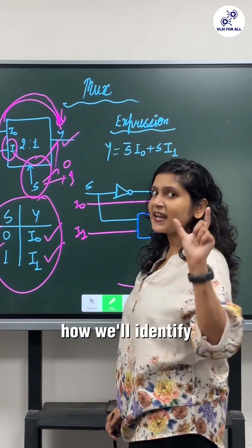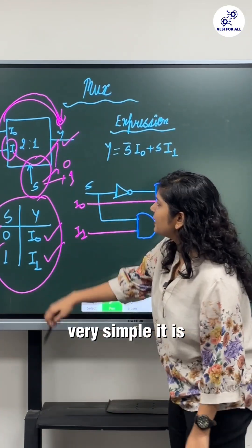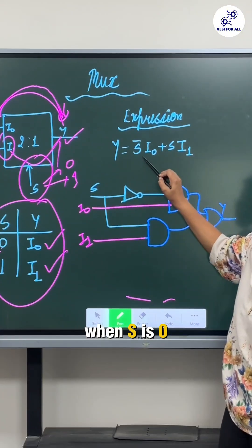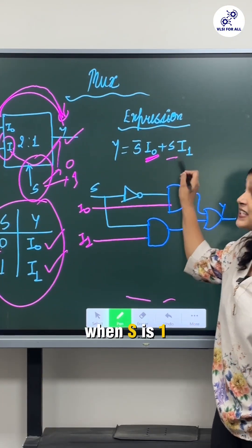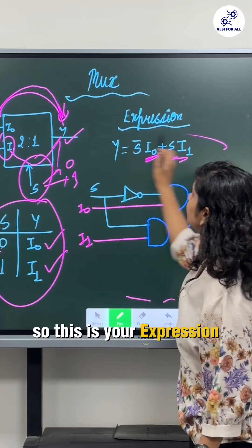Now we have to see how we will identify the expression. Very simple, it is when S is zero means it is complement, so you are getting I0. When S is one you are getting I1. So this is your expression for output of multiplexer that is 2:1.